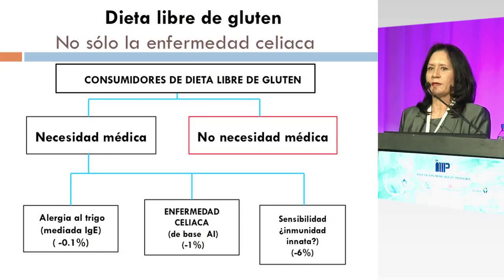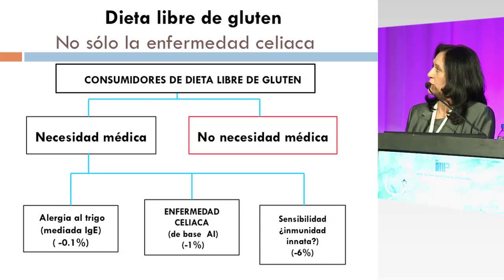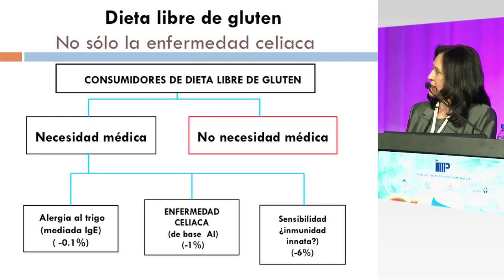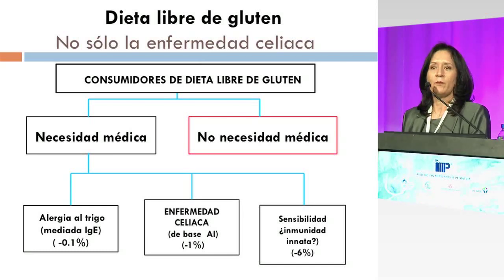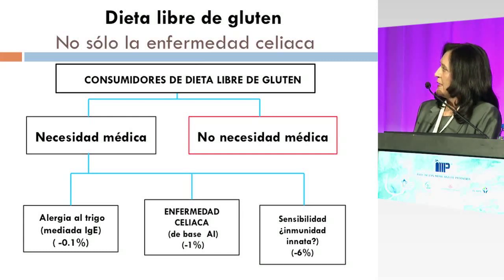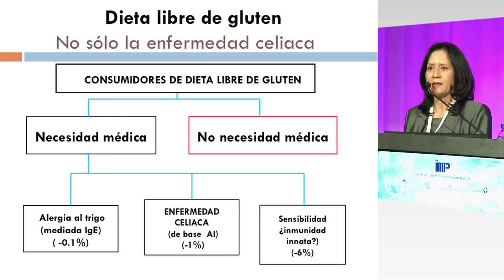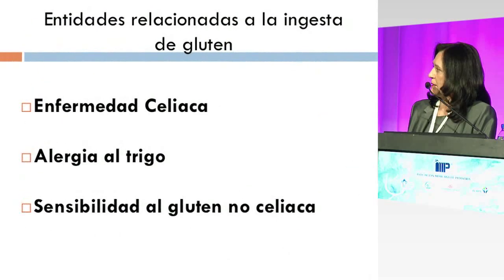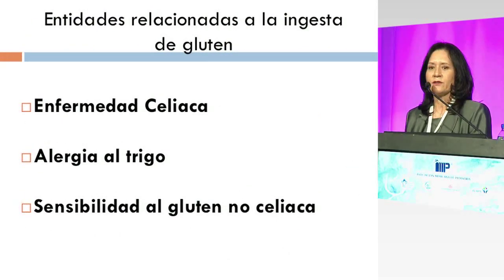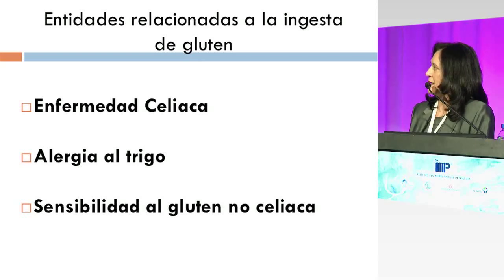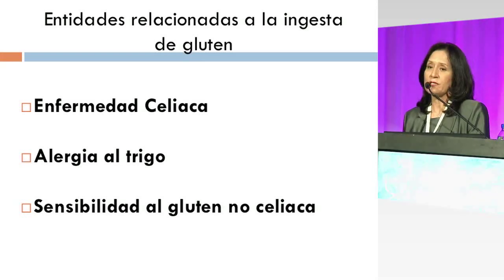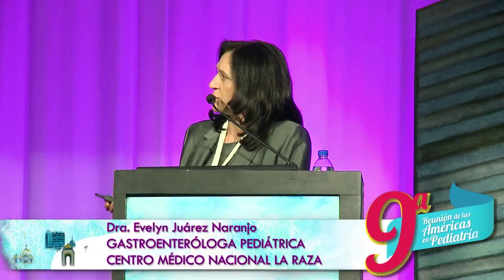No puedo dejar de comentarles que hay tres entidades que básicamente nosotros reconocemos que requieren una dieta libre de gluten. Las agrupé de dos maneras: hay quienes necesitan por cuestiones médicas restringir la dieta de gluten y hay quienes no tienen una necesidad médica real de esta dieta. Las necesidades médicas están en relación a la alergia al trigo, a la enfermedad celíaca y a la sensibilidad al gluten no celíaca, este último un diagnóstico que aún está en controversia.